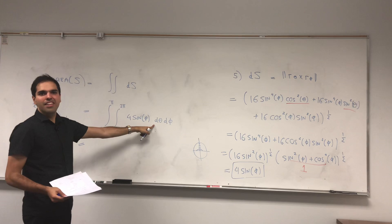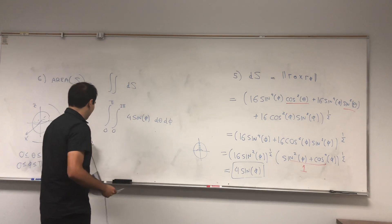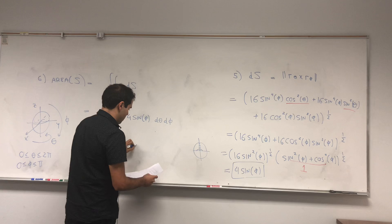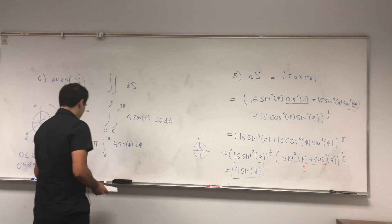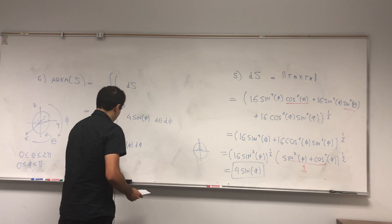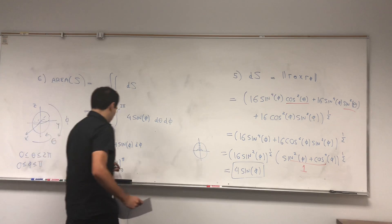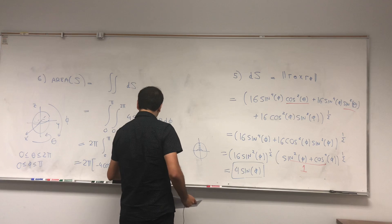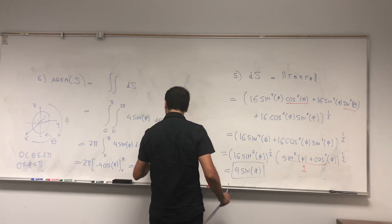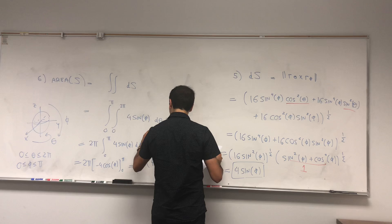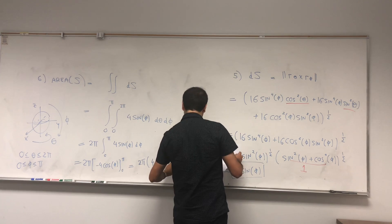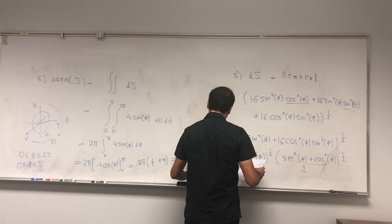And now we put our bounds. So dS is 4 sin(phi). And now our two variables like du dv which are d(theta) d(phi). Theta is between 0 and 2π. Phi is between 0 and π. This integral doesn't depend on theta at all, so it's 2π minus 0, so it's 2π times the integral from 0 to π of 4 sin(phi) d(phi). An antiderivative is -4 cos(phi) from 0 to π. And that just becomes 2π times -4 times -1 which is 4 plus 4 times 1 which is 4. So you end up getting 8 times 2π which is 16π, which indeed is 4π times 2².